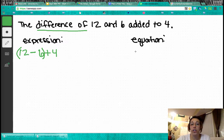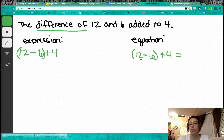So we come over here and we start with our expression. We put an equal sign to make it an equation. And then we start our work. 12 minus 6 is done first because it's in parentheses. We copy down the rest of the problem. And 6 plus 4 equals 10.